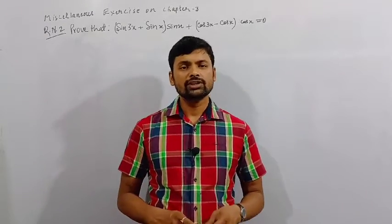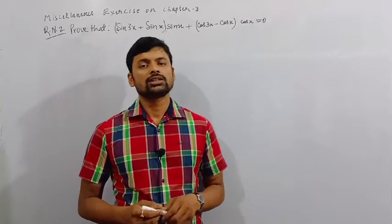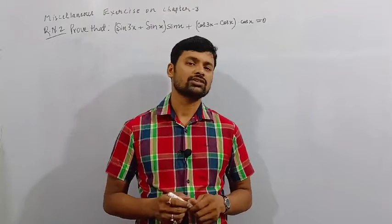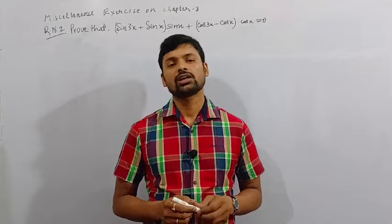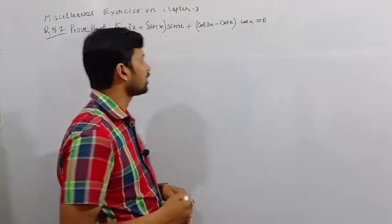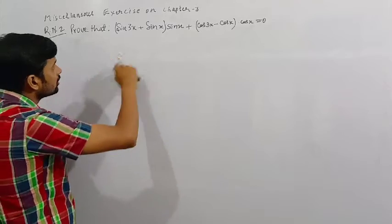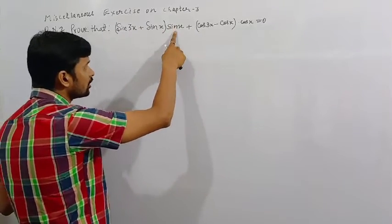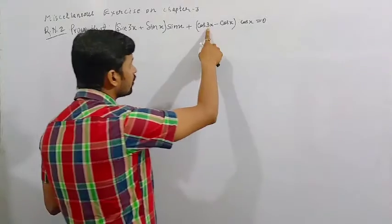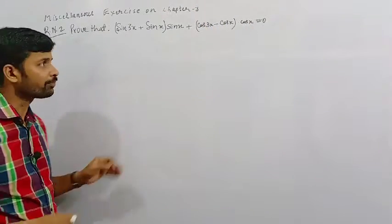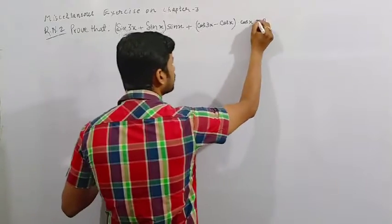Hello everyone, in this video I will solve the second question of miscellaneous exercise on chapter 3 trigonometry of class 11 NCERT. The question is: prove that (sin 3x + sin x) × sin x + (cos 3x - cos x) × cos x = 0. This is equal to 0.